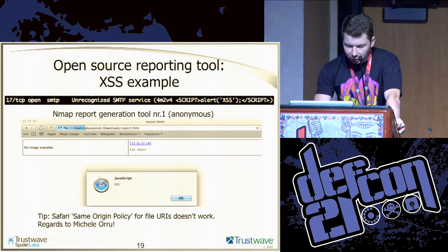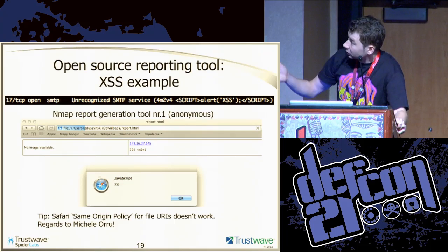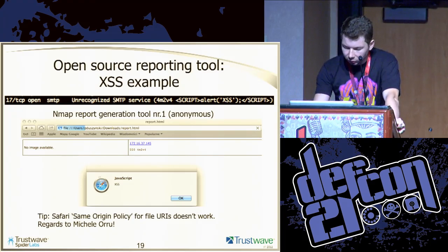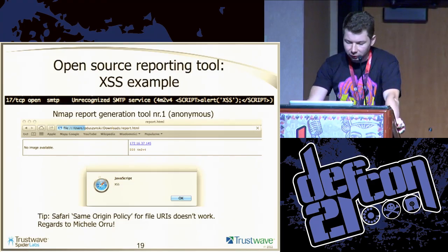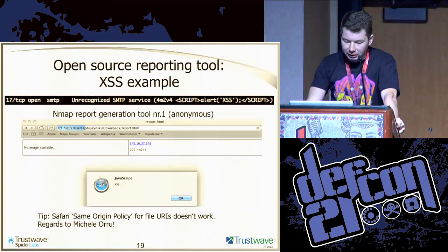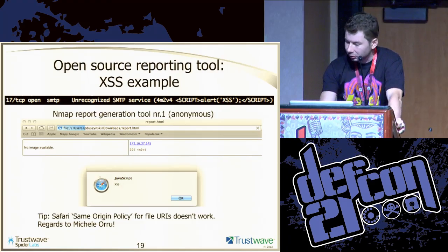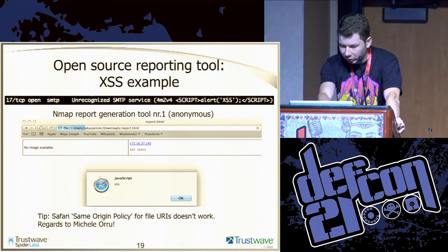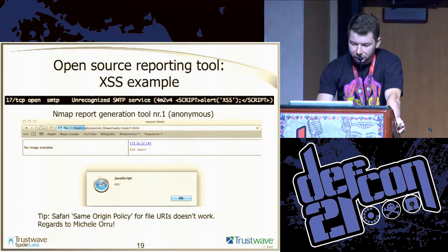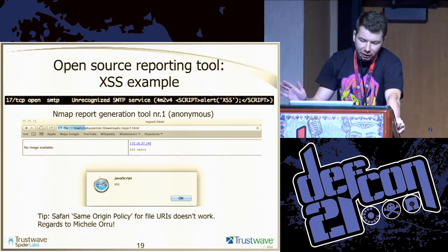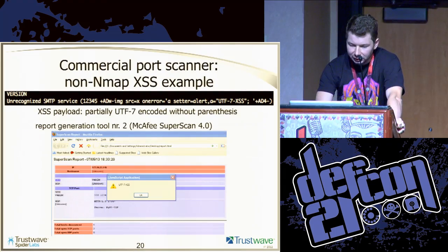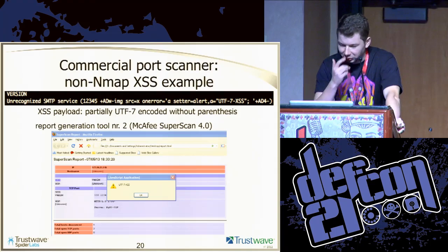There's a nice thing about it: if they launch Safari and go through the results, the same-origin policy doesn't apply for file URI handlers. My friend Mikhail told me this one. There's a simple exploitation vector — like port 17. The next example is non-NMAP, just to show we don't stick to NMAP all the time — it's just a proof of concept.